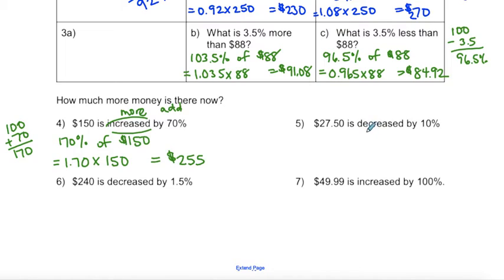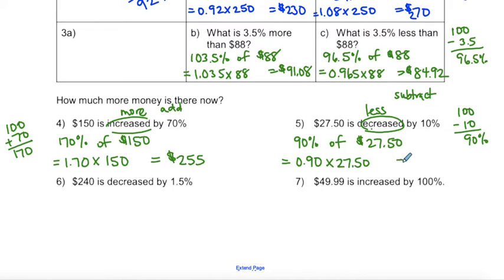What happens if we are decreasing now? So decreasing means less, which also means subtract. So this time I'm taking my 100%, which is my original amount, and I'm subtracting 10%. So I want to find 90% of $27.50. That's the same as taking 0.90, so changing my percentage to a decimal, and multiplying that by 27.50. And that gives me an answer of $24.75.